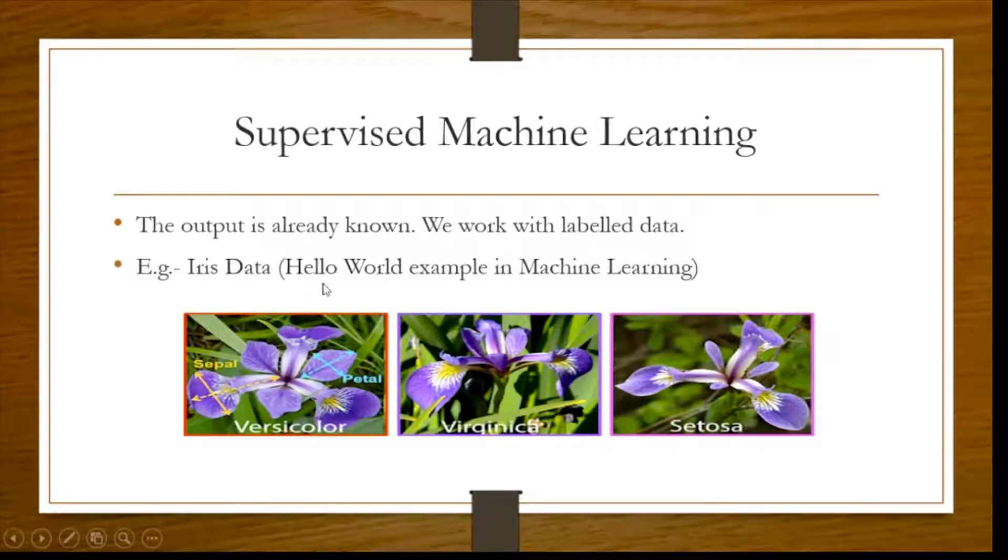And this iris data set is also called the hello world example in machine learning, a very basic data set. This is where we learn machine learning models and this is supervised because we already know the species of the flower. So this is supervised machine learning.